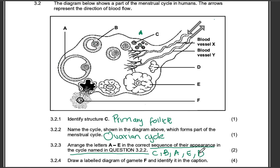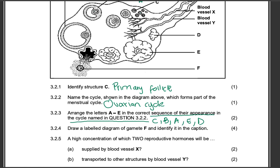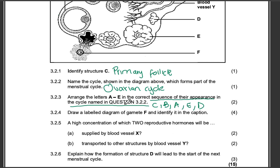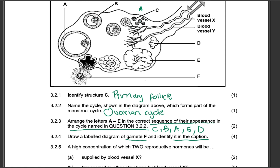They've said A to E, so we can't go to F. The next question: draw a labeled diagram of gamete F and identify it in the caption. So you must draw a labeled diagram of gamete F, which is the ovum, and we need to identify it in the caption. We're going to follow drawing and labeling rules. This is out of four marks.